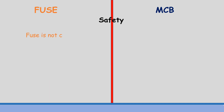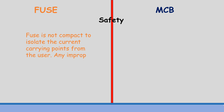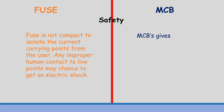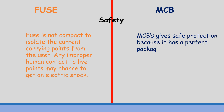A fuse is not compact enough to isolate the current-carrying points from the user, so any improper human contact with live points may result in an electric shock. MCBs provide safe protection because they have a perfect package with an enclosed case, ensuring complete isolation.